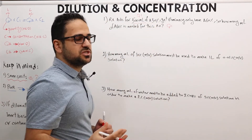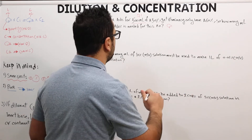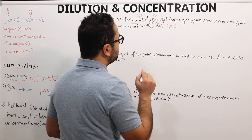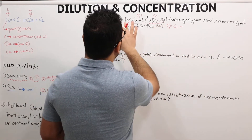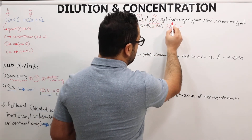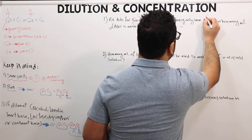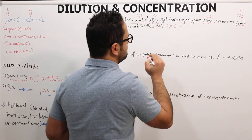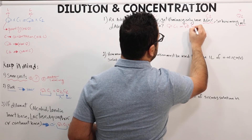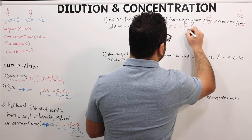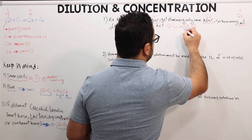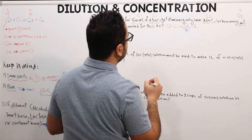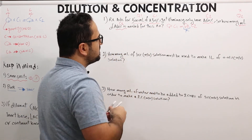When solving these questions, always write the formula first. So we have Q1 times C1 equals Q2 times C2. Q1 is 500 mL (the old quantity), C1 is 50% (concentration one). The pharmacy only has 60% — that is C2. We need to find how many milliliters (Q2) are needed, so Q2 is the unknown, X.